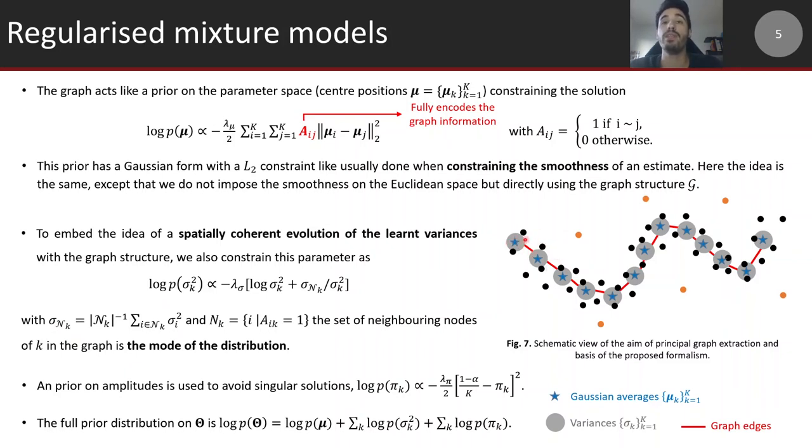We also add an additional prior on the amplitude to avoid singular solutions, centered at the uniform distribution for the amplitudes. The full prior distribution on the parameter space theta is obtained by the summation of the regularization terms or prior distributions for all individual parameters. This builds up the idea of the regularized mixture model.